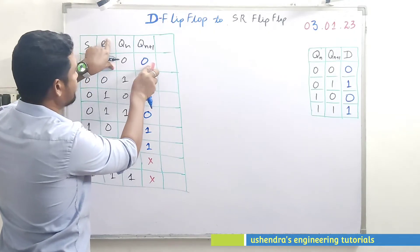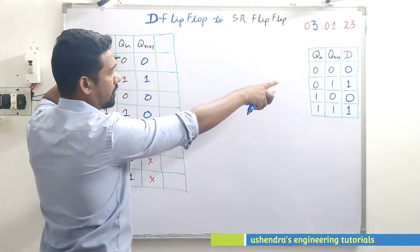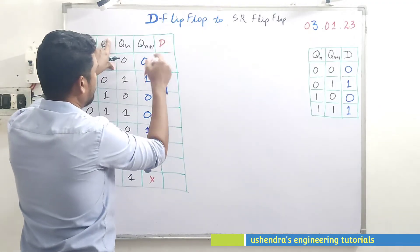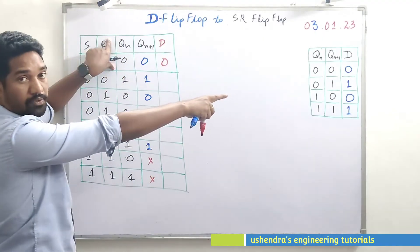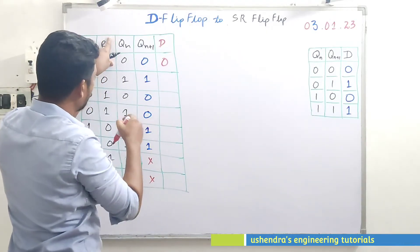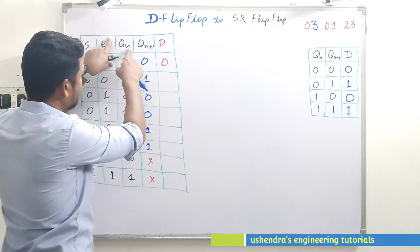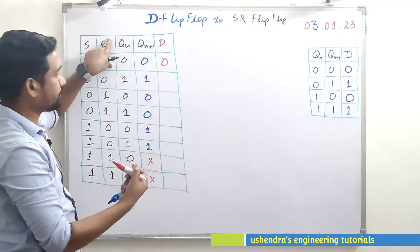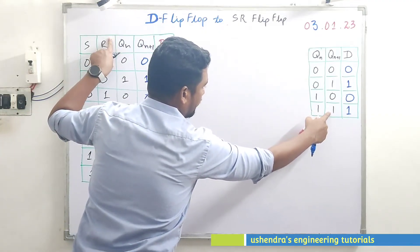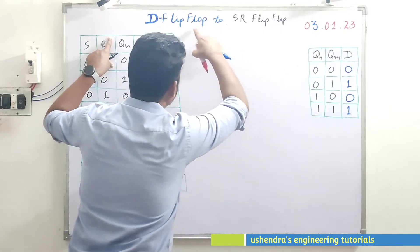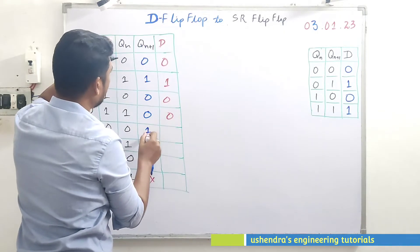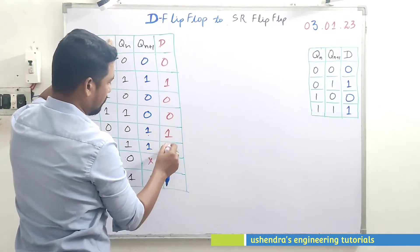Next, we add another column: using the present state and next state, we fill in the excitation inputs for the given flip-flop — the excitation table of the given D flip-flop. For the 0-0 condition, D is 0. For 0-1, D is 1. For present state 1 and next state 1, D input is 1. The full excitation table is: 0→0: D=0; 0→1: D=1; 1→0: D=0; 1→1: D=1.